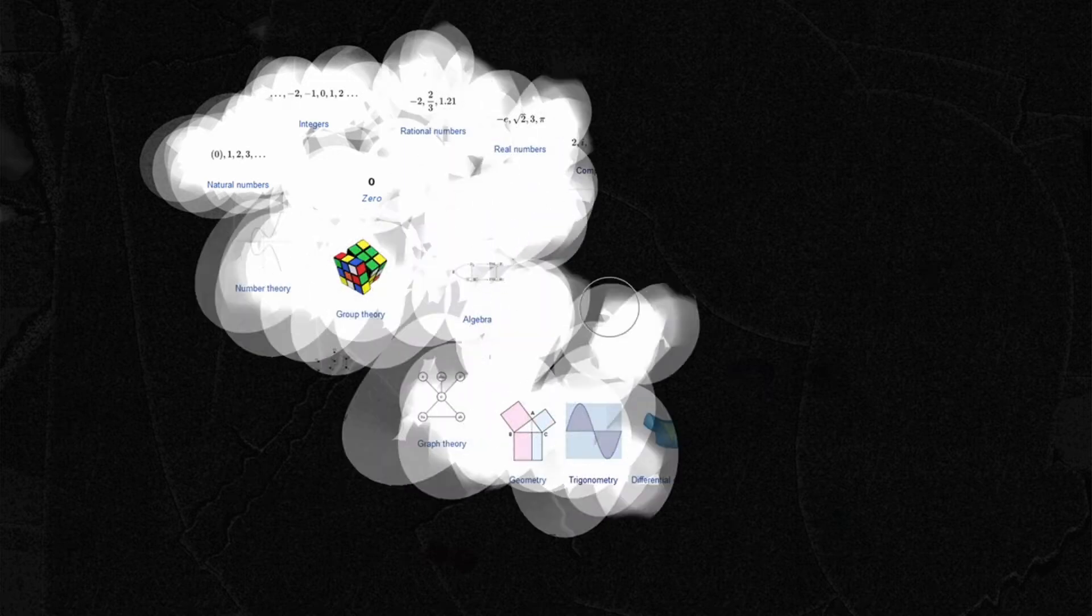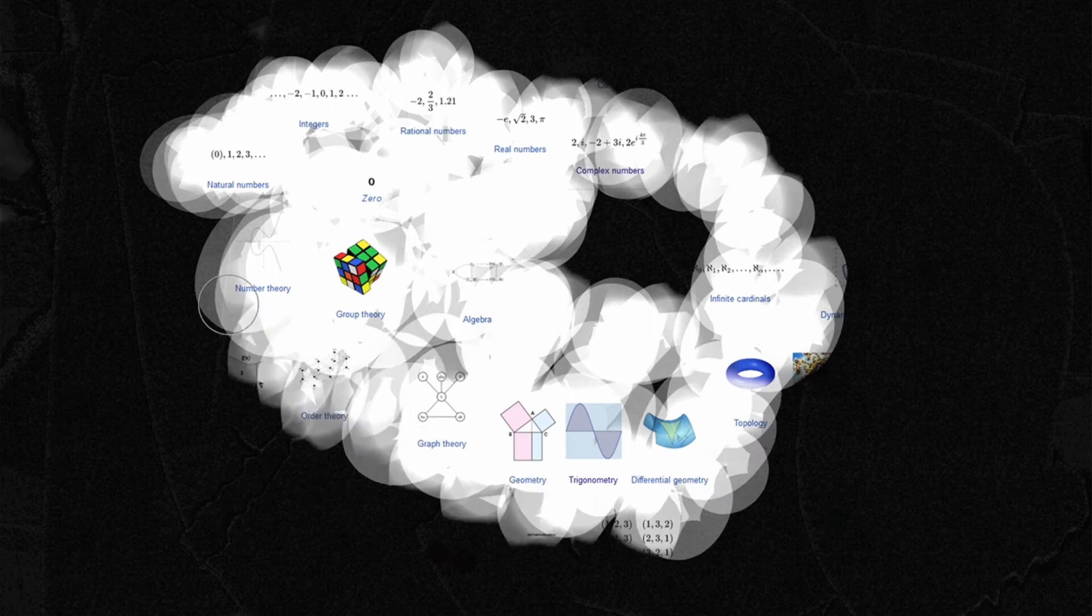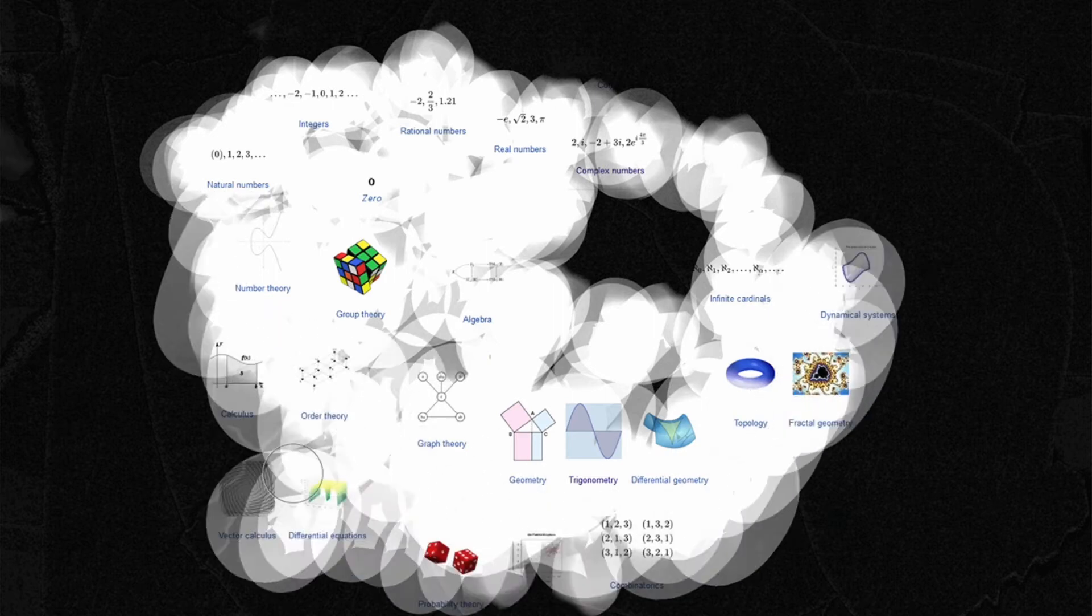This black stuff is the fog of ignorance about mathematics, the science of numbers and their relations, structures and regularities. Mathematicians have been mining this intellectual landscape for thousands of years, revealing knowledge beneath the black fog.